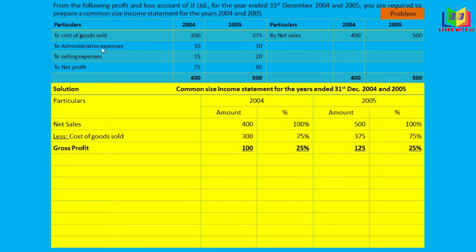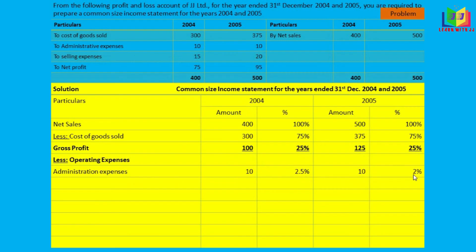Now for operating expenses, which include administrative expenses and selling expenses. Administrative expenses are 10 for both 2004 and 2005: 10 divided by 400 gives 2.5%, and 10 divided by 500 gives 2%. Selling expenses are 15 for 2004 and 20 for 2005: 15 divided by 400 gives 3.75%, and 20 divided by 500 gives 4%.